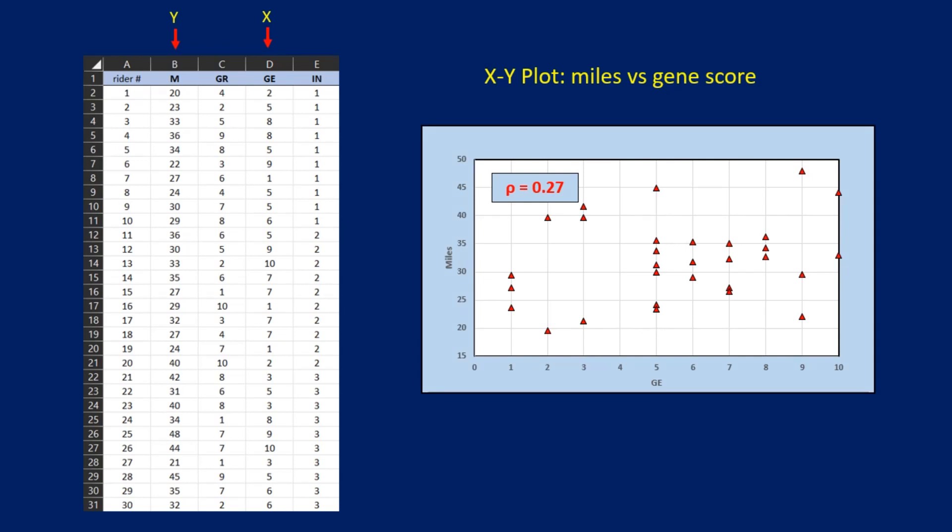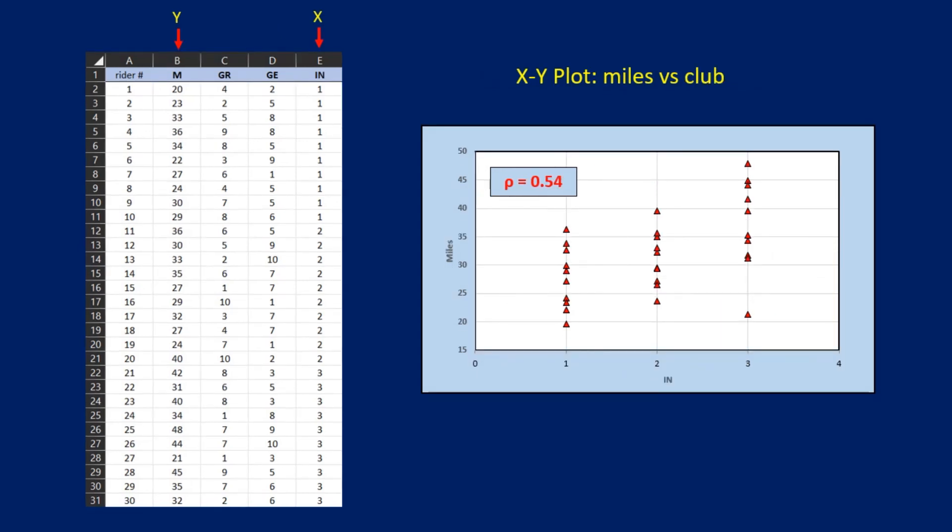A few minutes ago, when we looked at this XY plot, we didn't see any evidence of a relationship between m and ge, but the more rigorous calculation of rho shows that a rather weak relationship does in fact exist. Finally, the correlation between m and in is 0.54, which is just a little bit stronger than the correlation between m and gr.